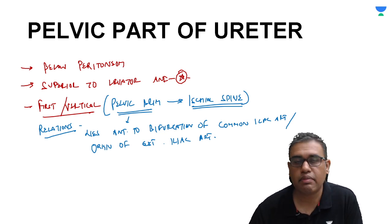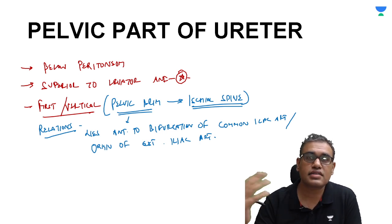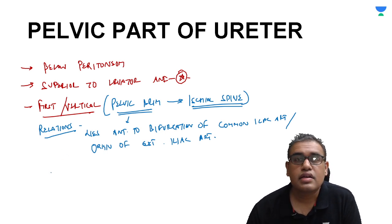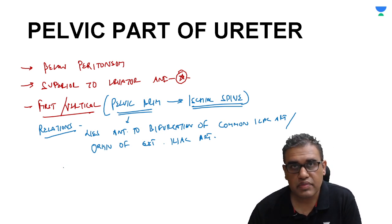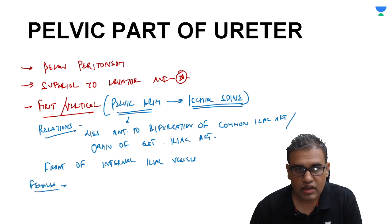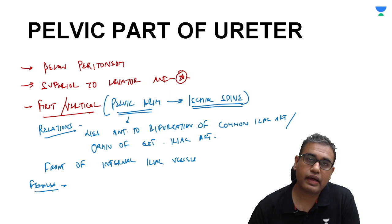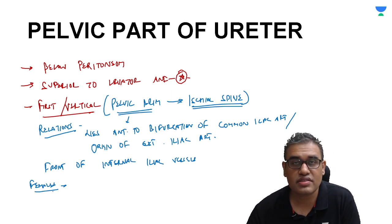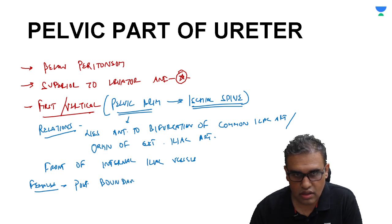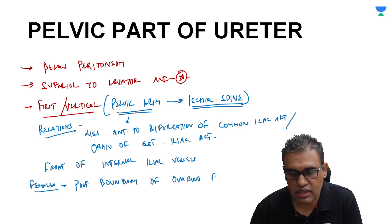At the point where the common iliac divides into external and internal iliac, the ureter passes in front of the internal iliac vessels — this is a very important relation. In females specifically, the ovary lies in the ovarian fossa, and the ovarian fossa lies in front of the ureter. So the ureter forms the posterior boundary of the ovarian fossa — this relation exists in females but not in males.